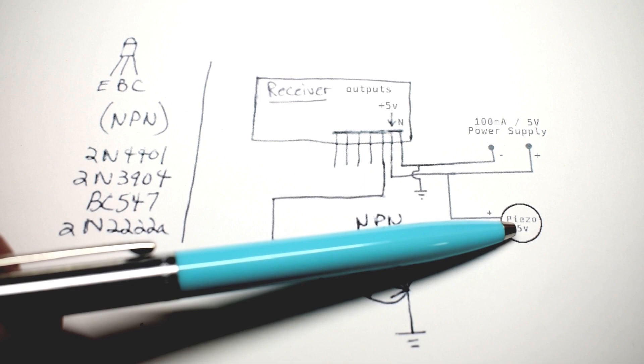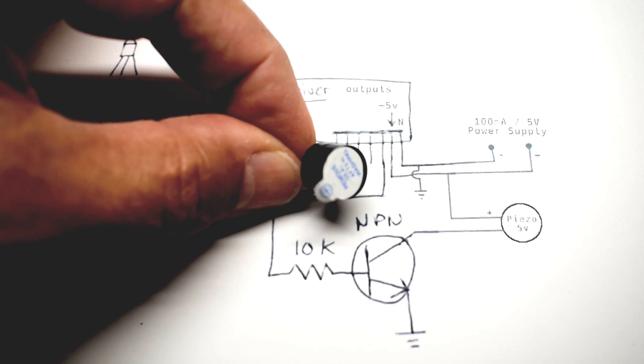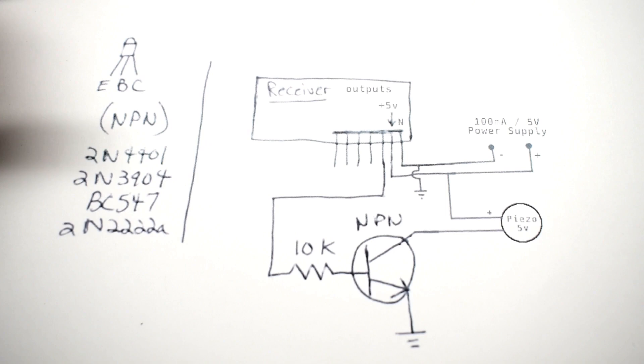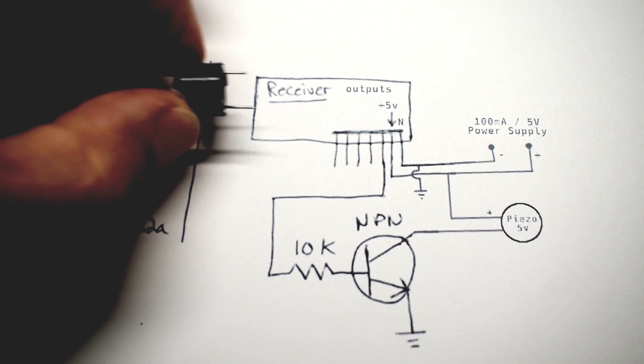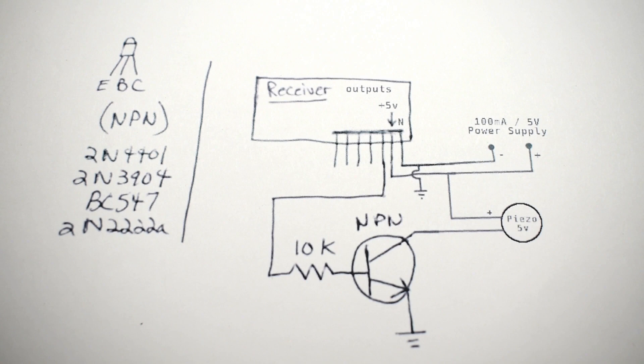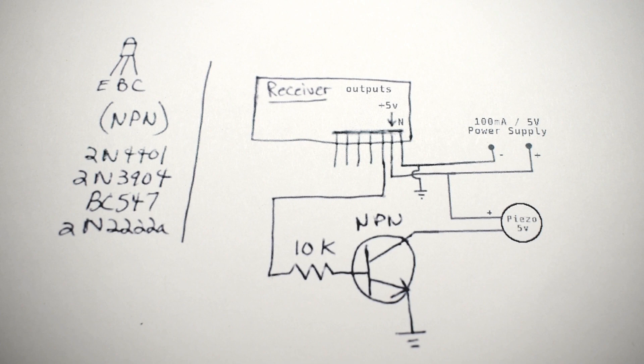You're going to take the positive from the piezo alarm. Keep in mind, the alarm has a built-in oscillator, just like this one right over here. If it does not have an oscillator built into it, nothing is going to be heard when the circuit triggers. Make sure it has a built-in oscillator. If you take a closer look, you can see one of the legs are longer. The longer one is the positive. The negative from the piezo alarm connects to the collector of the NPN transistor.